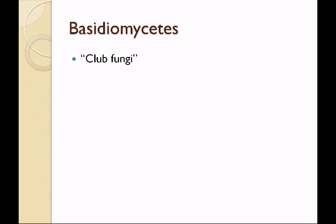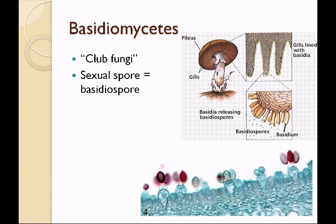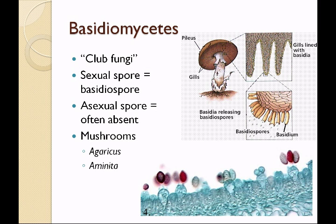The basidiomycetes are the club fungi. The sexual spore is called a basidiospore. It is born from gills, and the basidiospores are released into the soil to give rise to new mushrooms. The asexual spore in the basidiomycetes is often absent. The basidiomycetes are the mushrooms. Agaricus is the common mushroom that you put on your pizza, whereas Amanita is the death angel — a very deadly fungus.